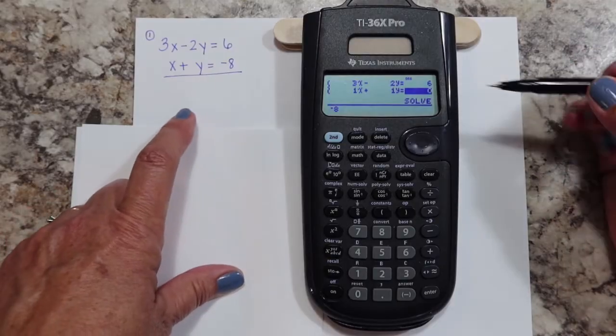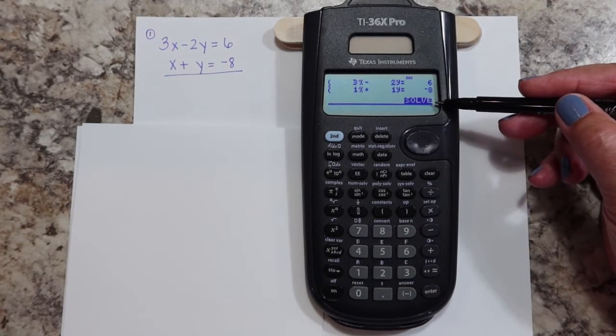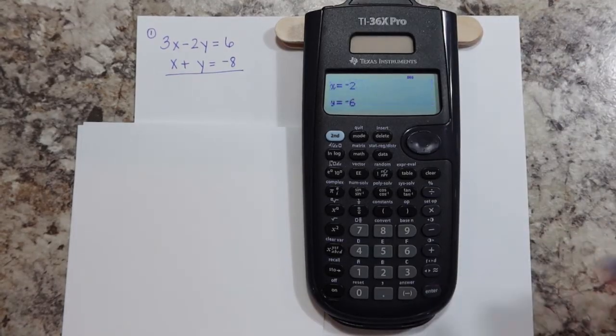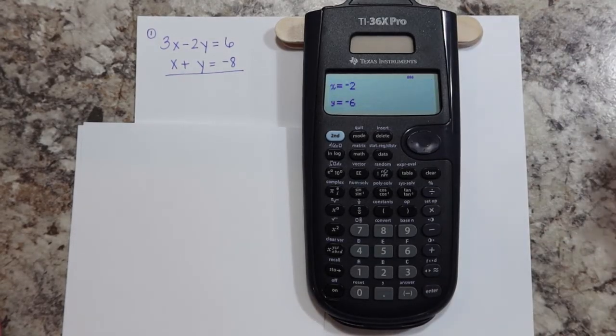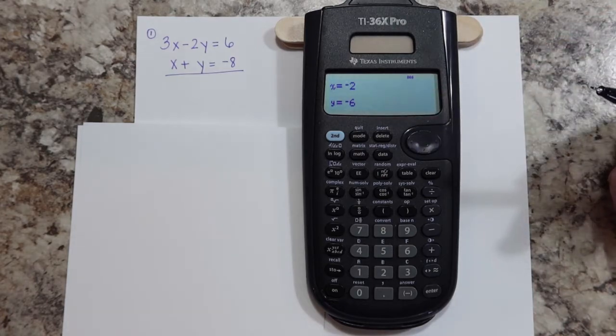Now hit enter, and you're ready. You see now we have 'solve' here. We're going to hit enter, and there's your answer. X is negative two, Y is negative six.